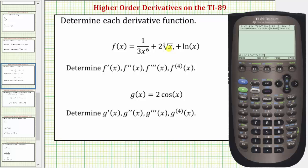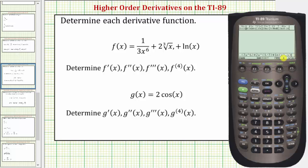Now for the cube root of x, we'll enter this as x raised to the power of one-third — so x, exponent key, and then in parentheses one-third, or one divided by three — plus natural log of x, which is Second then X for natural log x, close parenthesis. Then we enter a comma, the variable x, and if we close the parenthesis and press Enter, this will give us the first derivative of the original function.